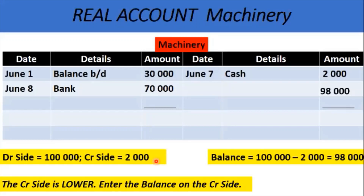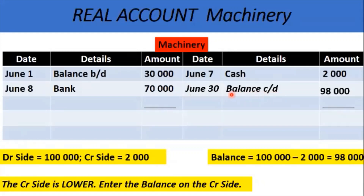We will call it the balance carried down, entered at the end of the period or the end of the month, when we have already completed the trial balance. We put this term in the details column — it's called balance carried down. The C/D stands for carried down, and it's the balance on the account that we are taking into the next accounting period.